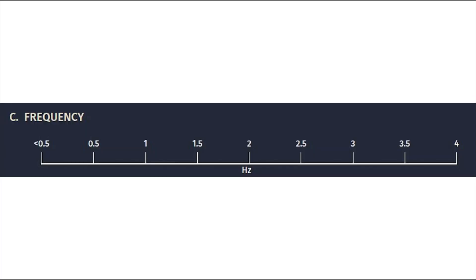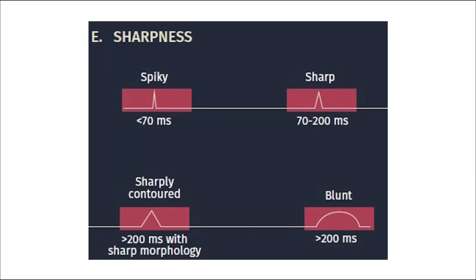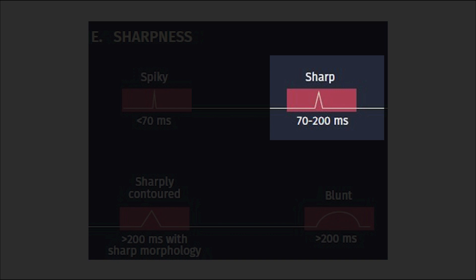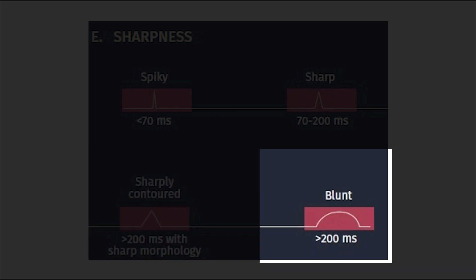The frequency of discharges is described in 0.5 Hz increments, and runs of discharges on the higher end could be ictal or potentially ictal patterns. The sharpness of discharges is also described: spiky means less than 70 milliseconds; sharp is between 70 and 200 milliseconds from takeoff to return to baseline; sharply contoured is greater than 200 milliseconds but with a sharp morphology; and blunt is a waveform with no sharp morphology greater than 200 milliseconds.